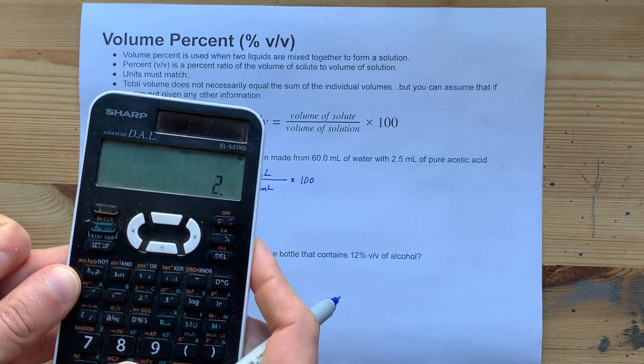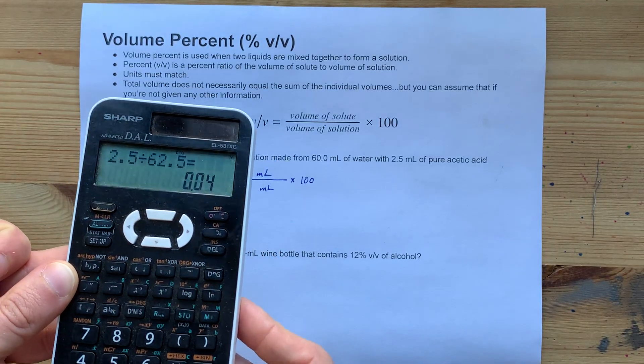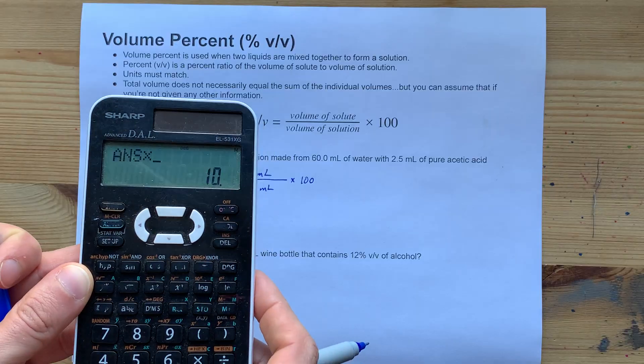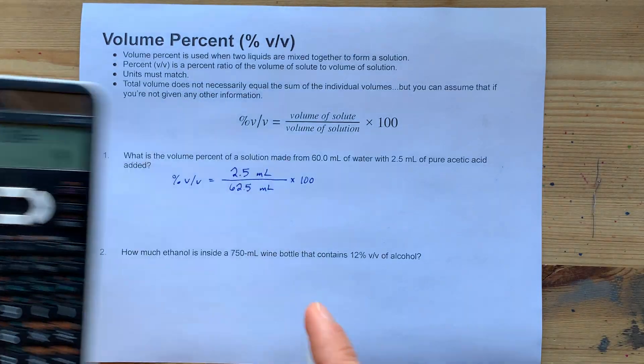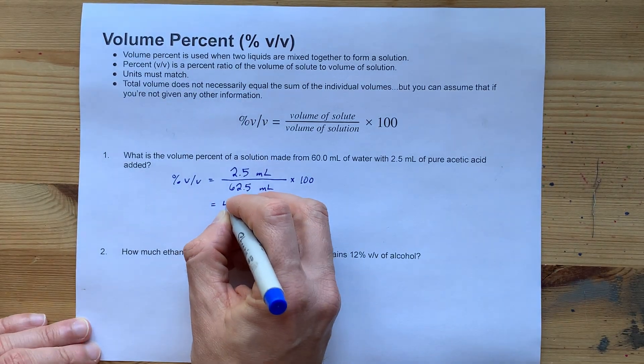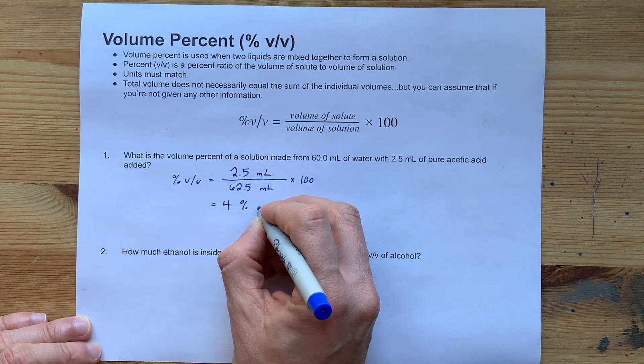So, 2.5 divided by 62.5, and then times by 100, gives me 4. So, apparently, this is 4 percent.